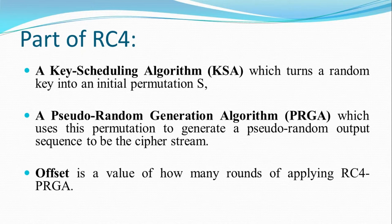The Key Scheduling Algorithm, or KSA, turns a random key into an initial permutation called S. This random key is anything that works on both ends — sender and receiver. The Pseudo Random Generation Algorithm, or PRGA, uses the permutation to generate a pseudo random output sequence to be the cipher stream. The offset is the value of how many rounds of applying RC4.